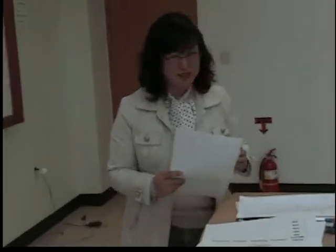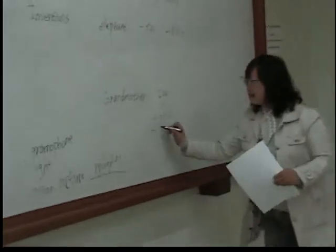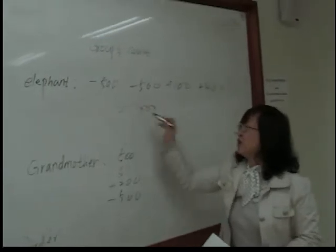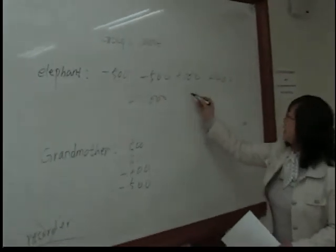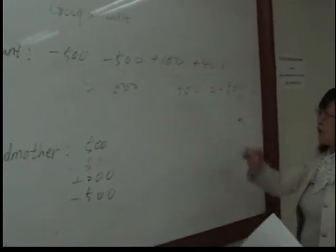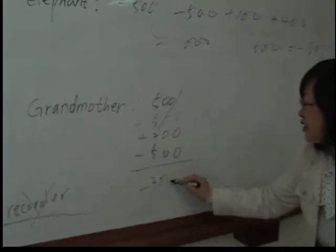When is Chuseok this year? A student answers 'the third of September' — that is incorrect, minus 500 points. After final calculations, the Grandmother team finishes at minus 300 points. Today's winner is Grandmother — give them a big hand!